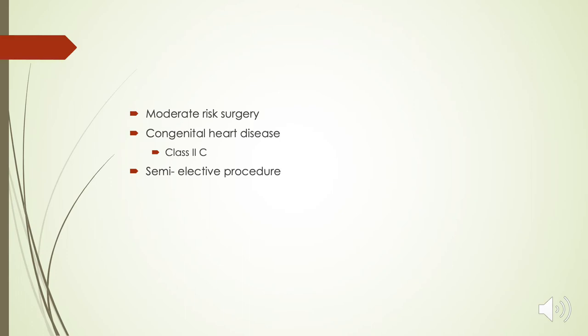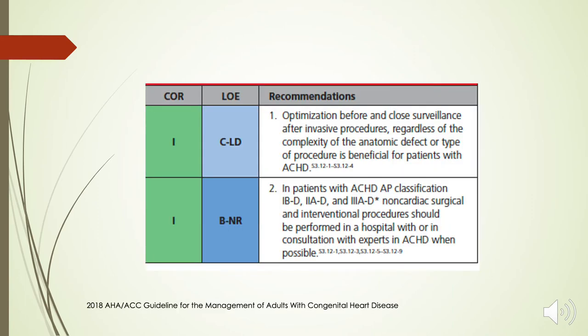To summarize, we have a semi-elective procedure — laparoscopic cholecystectomy — which is a moderate-risk surgery in a patient with congenital heart disease, specifically Epstein anomaly. This represents at least moderate complexity in anatomical classification and class C for physiological stage. Looking at the 2018 guidelines, they recommend optimization before surgery, close observation and monitoring following the procedure, and performing the procedure in a hospital setting in consultation with experts in adult congenital heart disease if possible.